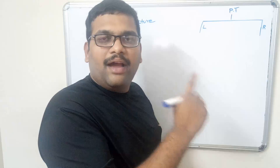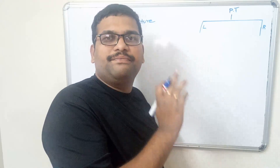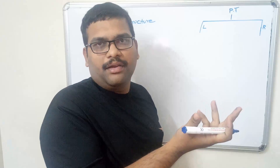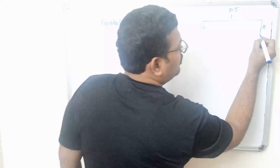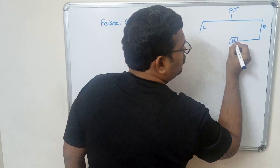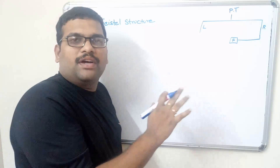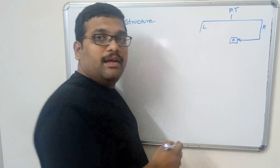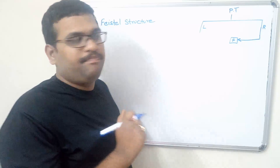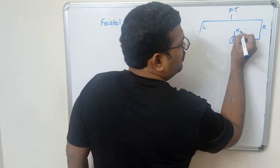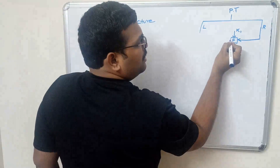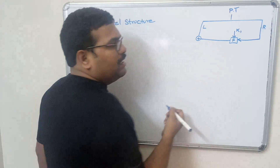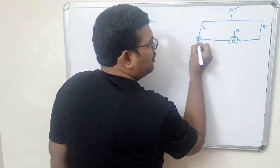On the right half we have to apply a function. The function may be anything — any logical function. It depends upon the algorithm — the function will be varying. But the right half will be applied to the function. In the function we will use a separate key, Key 1, and the output from this function will then be XORed with the left half.